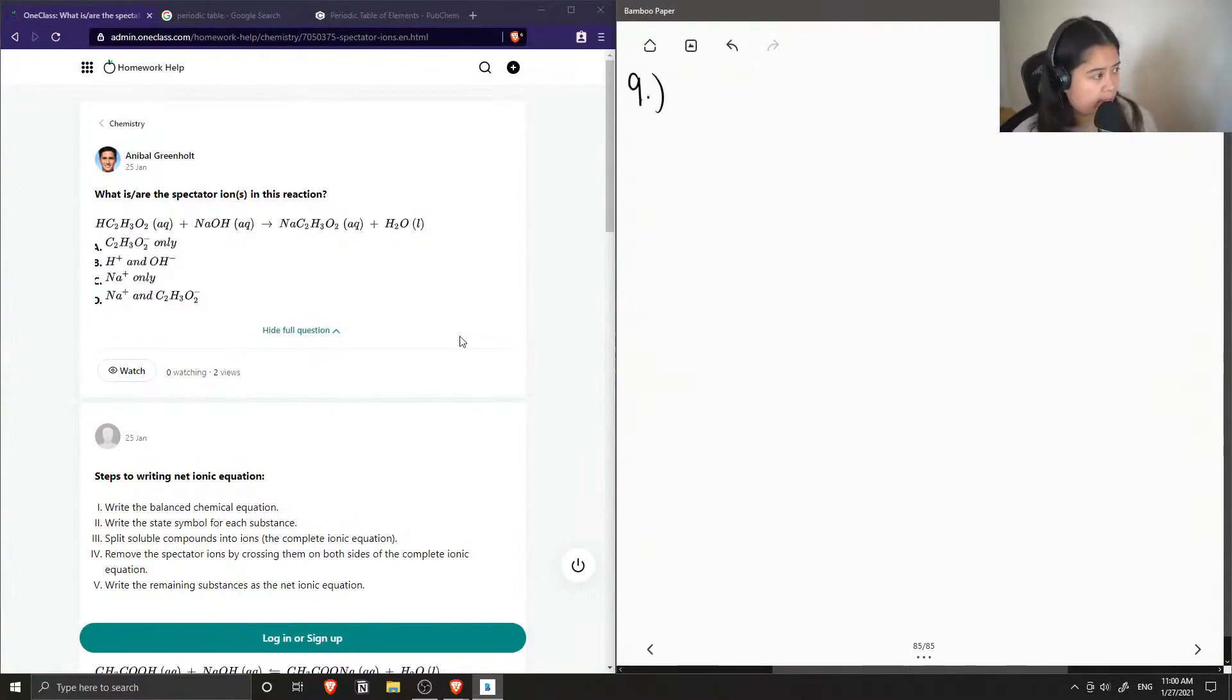Okay, so we have HC2H3O2, which can also be written as acetic acid. I'm just rearranging the atoms to make it easier to see it as acetic acid, which is aqueous, and it reacts with sodium hydroxide to form sodium acetate. So let me write it like this. Sodium acetate plus water.